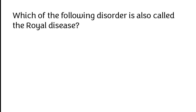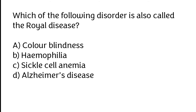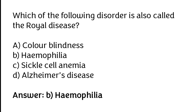Which of the following disorders is also called the royal disease? Color blindness, haemophilia, sickle cell anemia, Alzheimer's disease. The correct answer is option B. Haemophilia disorder is also called the royal disease.